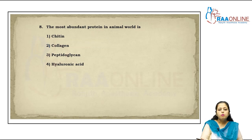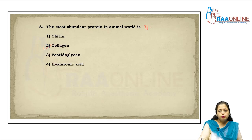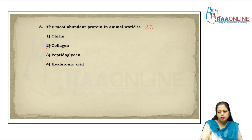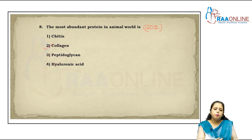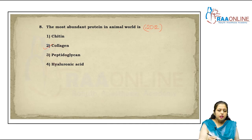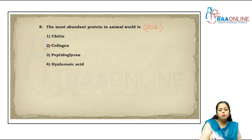The most abundant protein in the animal world is collagen — this is a question from a 2012 pre-medical exam. Collagen fibers are the most abundant in our body, help in repairing cells, and are also anti-wrinkle — when collagen fibers are in proper amounts, wrinkles are not found because it is related to tightening of the skin. Chitin helps in the formation of the exoskeleton of arthropods like cockroaches and the cell wall of fungi.